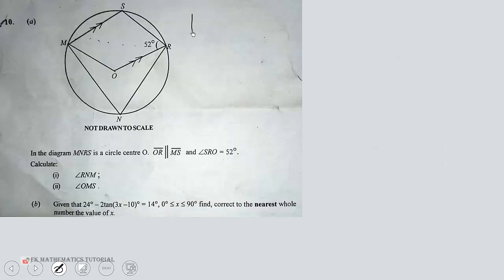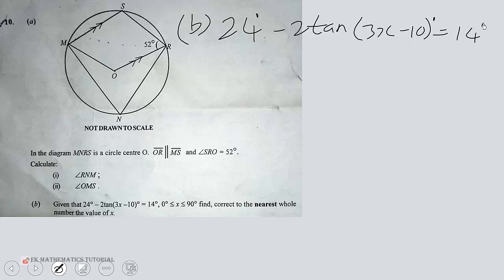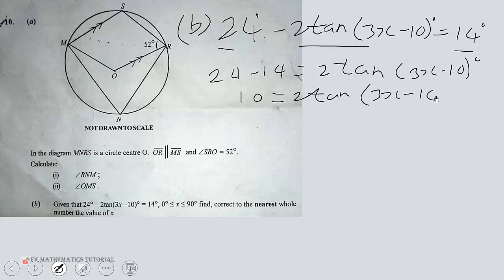We have the trigonometric equation: 24 degrees minus 2 tan(3x - 10 degrees) equals 14 degrees. Let me send this one to the other side to avoid the negative. So 24 minus 14 equals 2 tan(3x - 10). That's 10 equals 2 tan(3x - 10). Dividing through by 2, we get 5 equals tan(3x - 10).